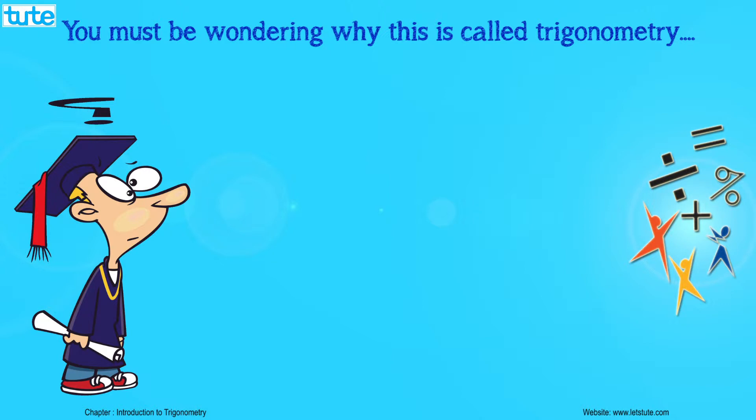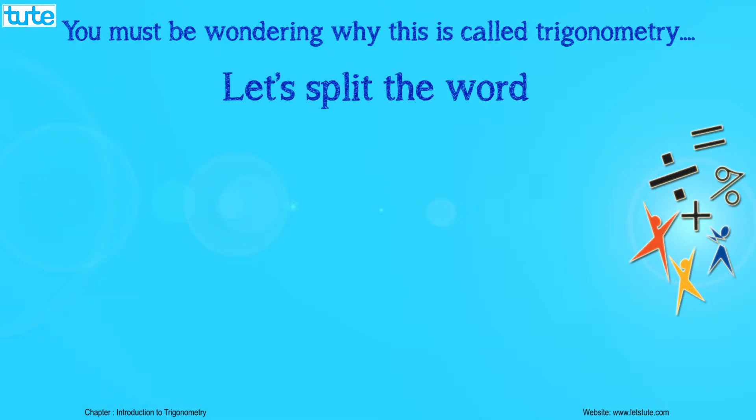It sounds like something extremely complicated, but let us split the word. Trigon means three angles, that is, a triangle, and metry means to measure.